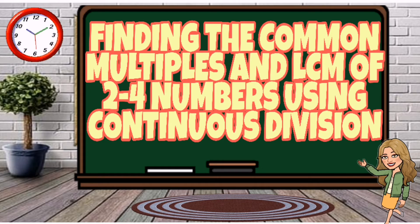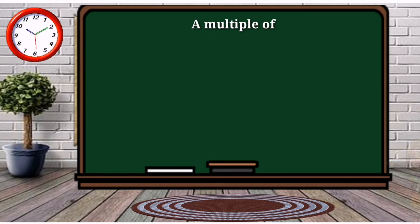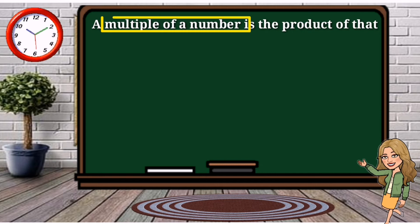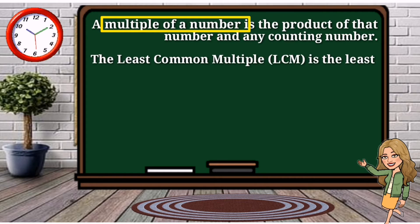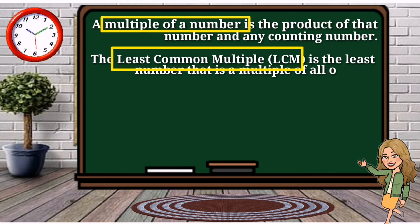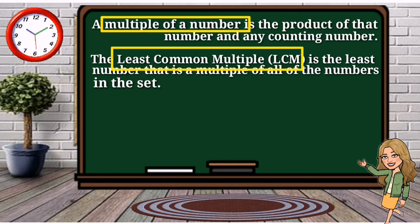A multiple of a number is the product of that number and any counting number. Just like common factors, two or more numbers also have common multiples. The least common multiple, or LCM, is the least common multiple of two or more numbers.